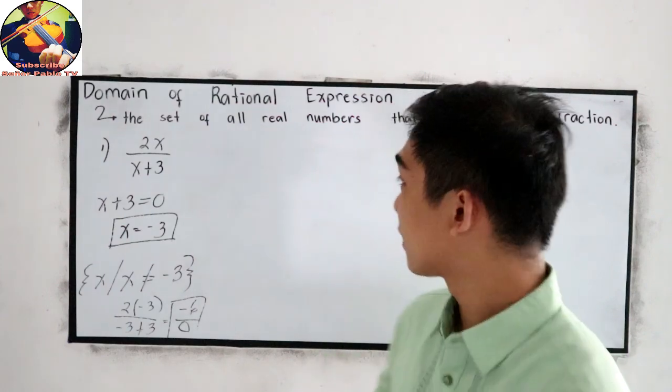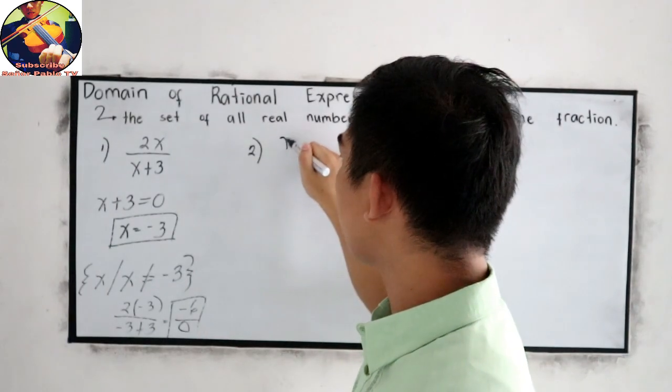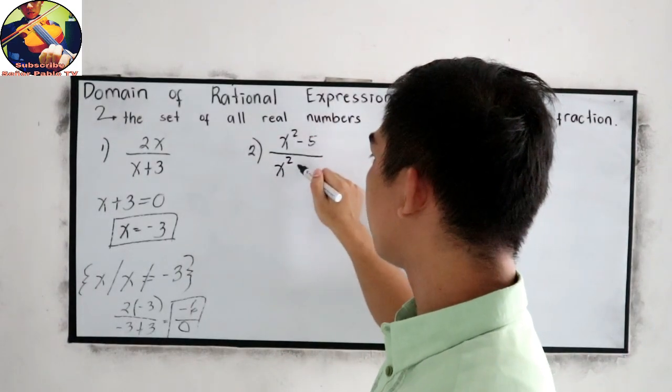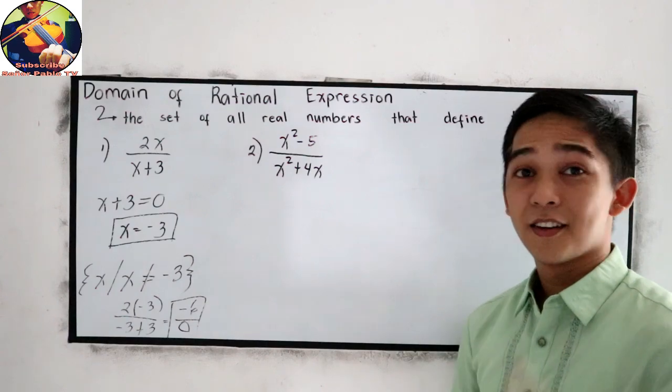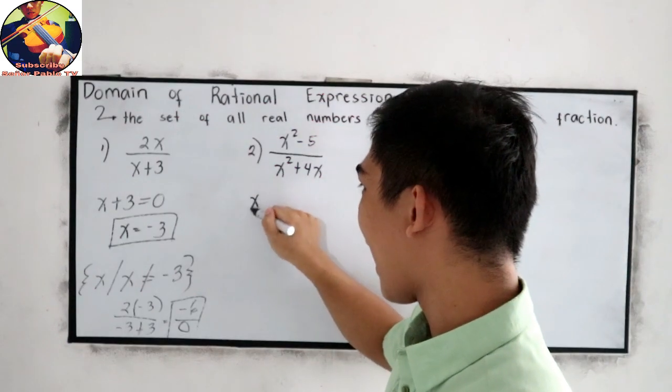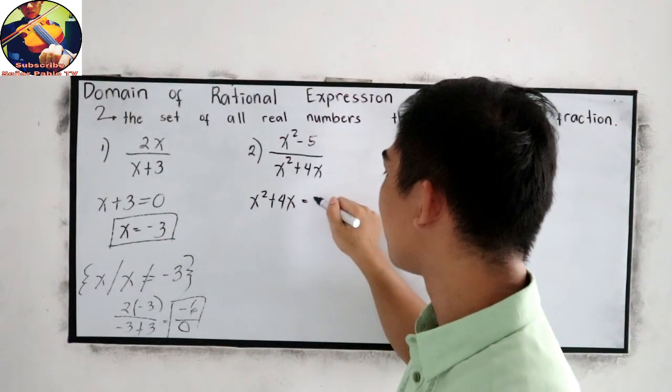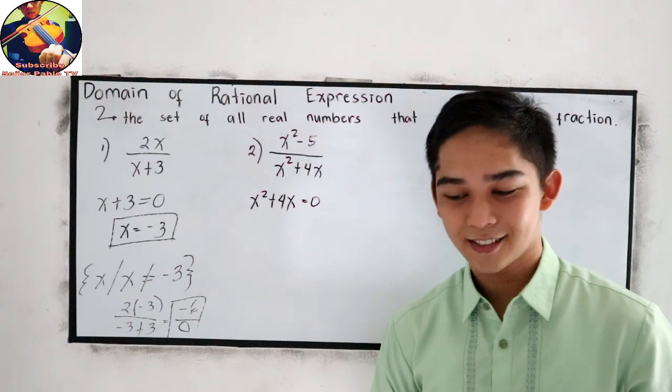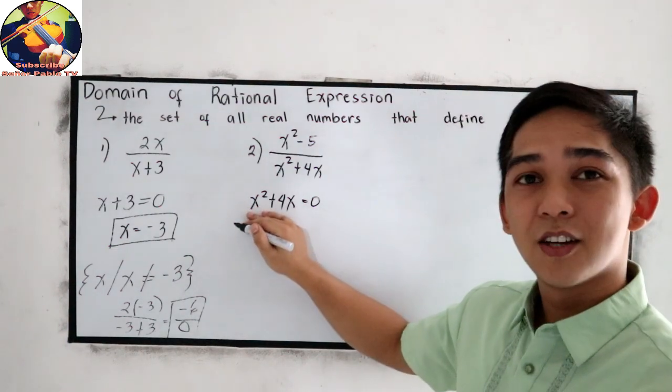Let's try our example number 2. Let's have x squared minus 5 all over x squared plus 4x. First step, copy the denominator, x squared plus 4x, then equate to 0. And now, solve for x. Focus on our denominator.